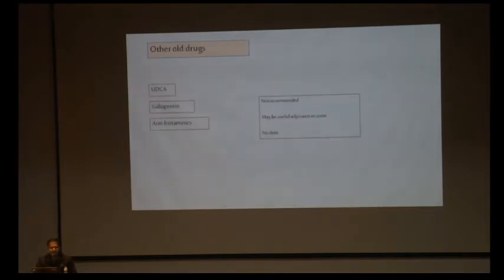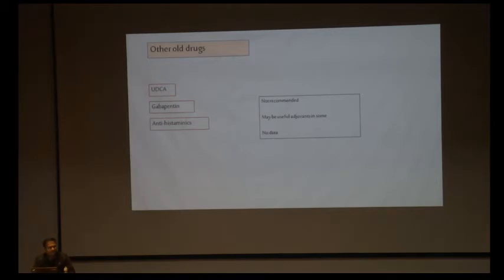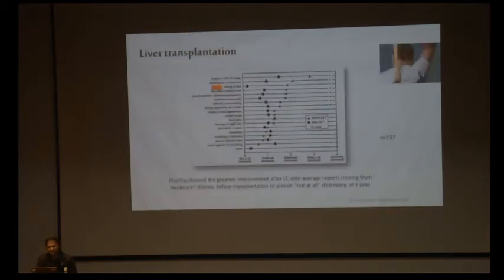Sertraline has been used, with one double-blind RCT showing efficacy at 75 to 100 mg, though it is not used regularly. UDCA is useful only in ICP; in other conditions it has no benefit and can only be used as an adjuvant, like antihistamines or gabapentin — with no data to support them. Liver transplantation is effective, with significant decrease in pruritus seen from baseline over a one-year follow-up.